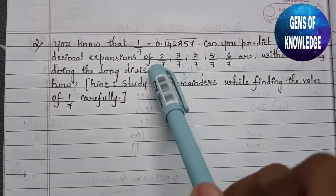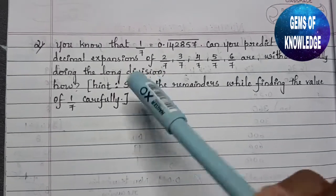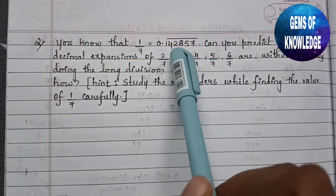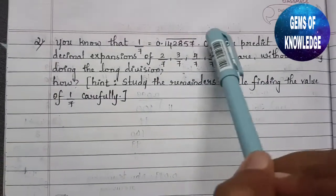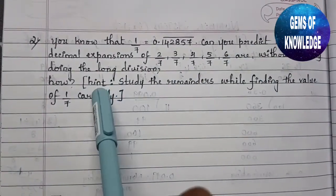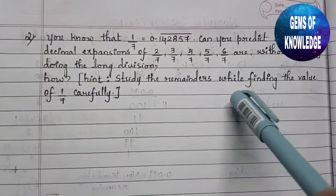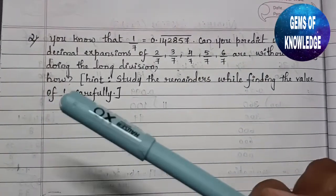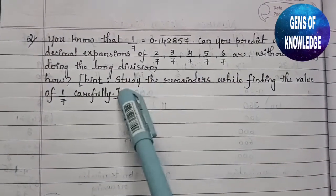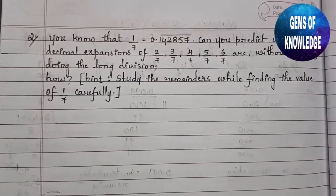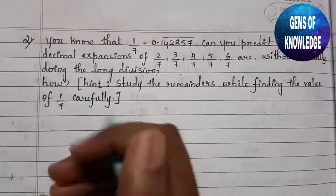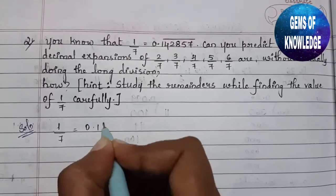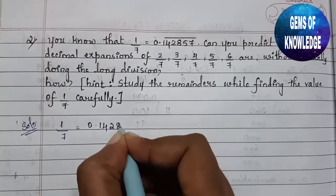Without dividing, we have to find the values of these fractions using only the hint that 1/7 = 0.142857̄. The hint also says: study the remainders while finding the value of 1/7 carefully. So let's start the solution. It is given that 1/7 = 0.142857̄.